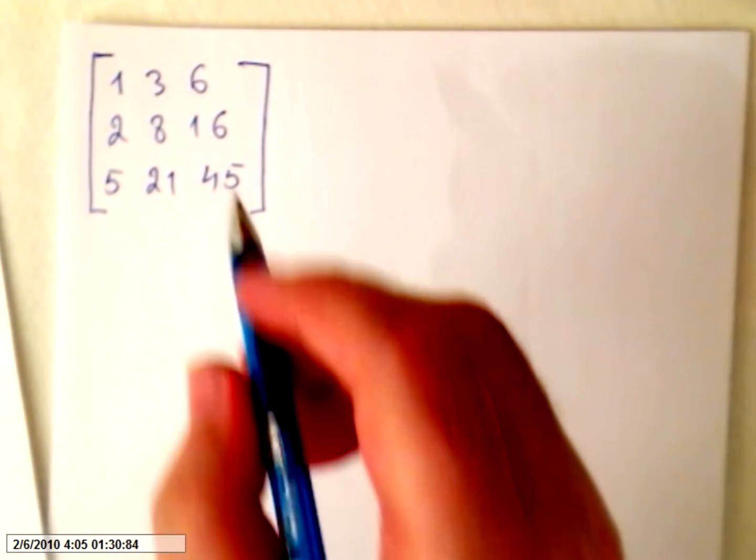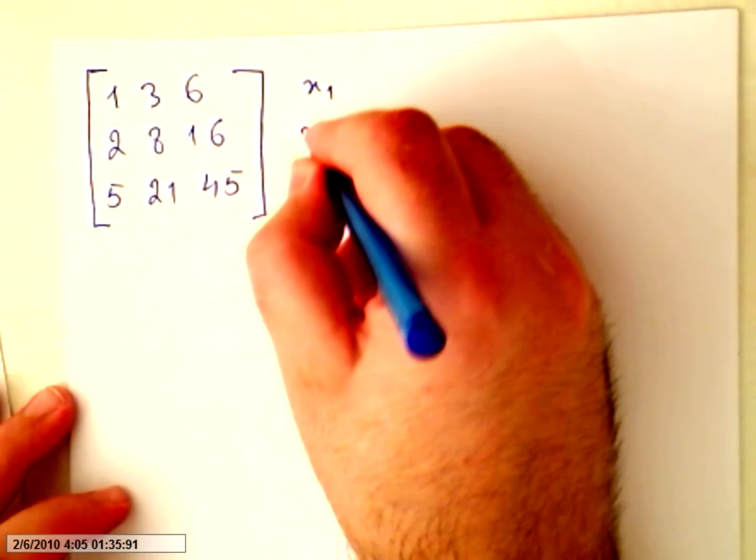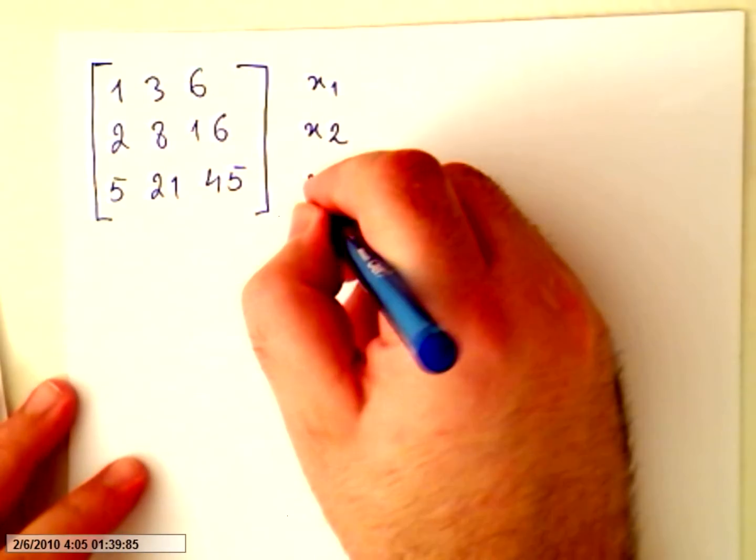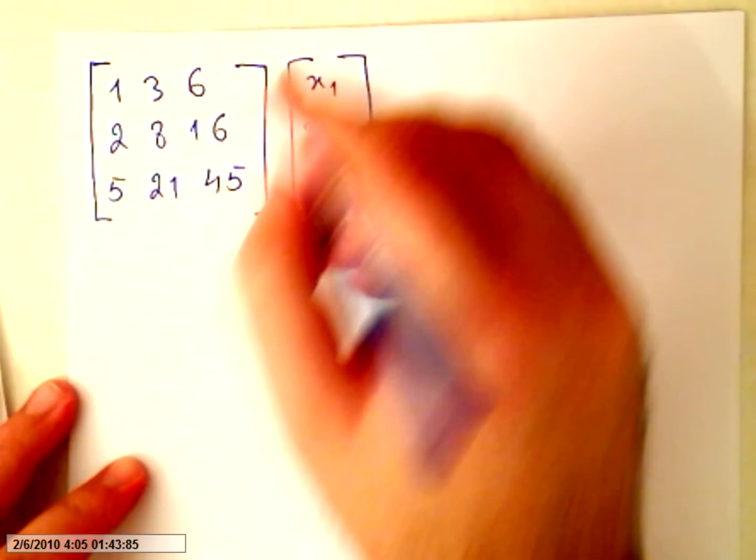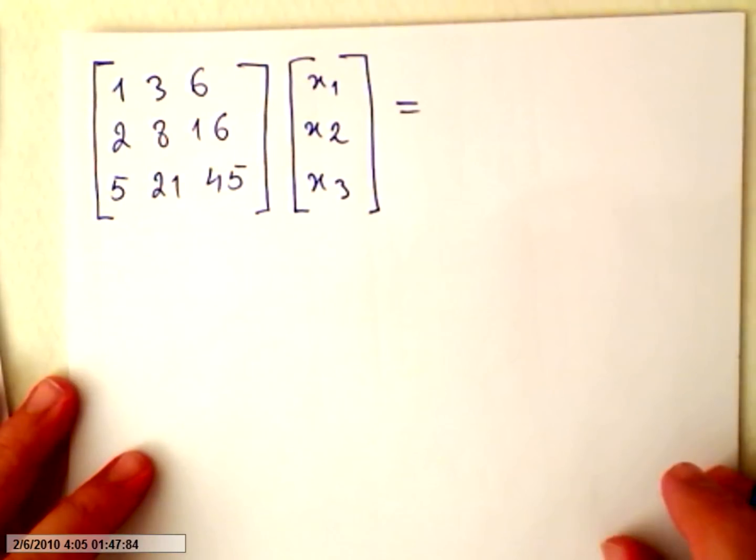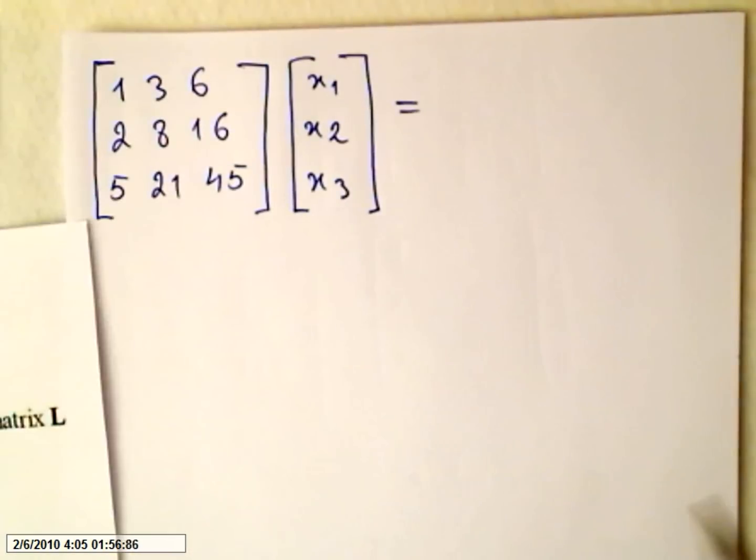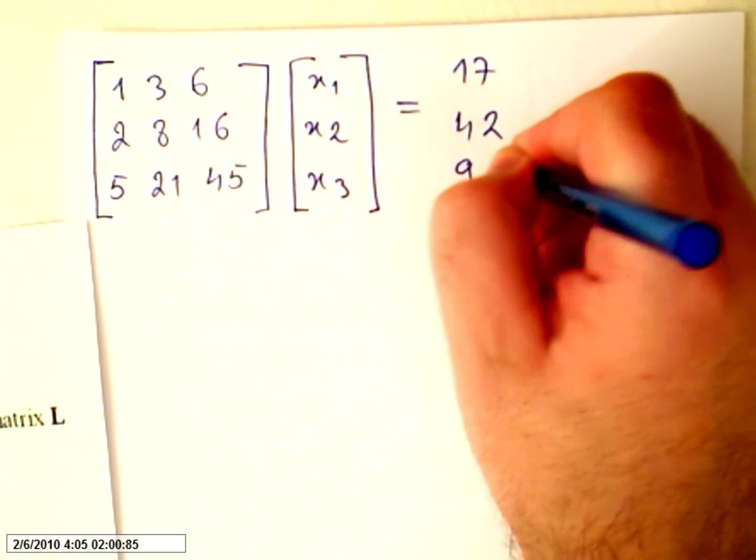So the variables will be x1, x2, and x3, and this will equal 17, 42, and 91.